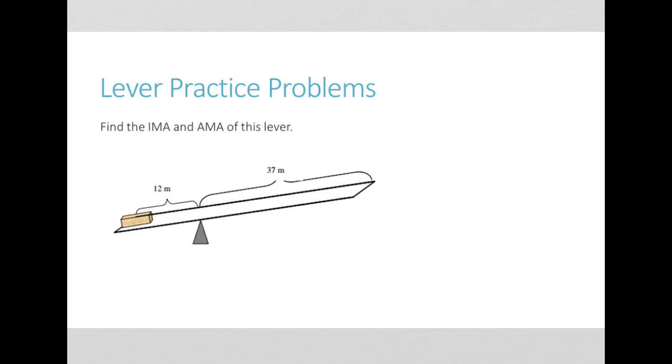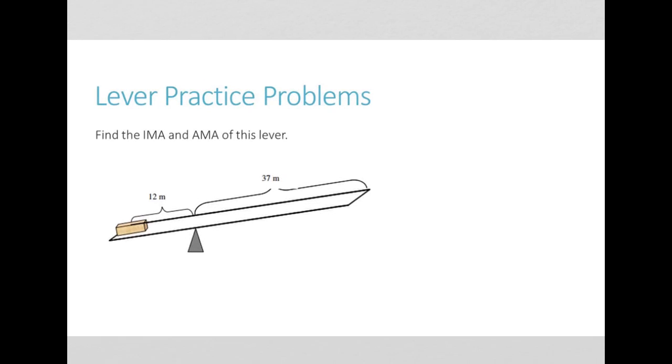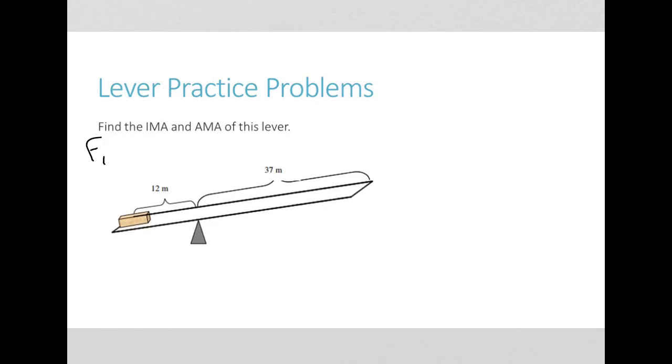Find the IMA and AMA of this lever. For this lever, we need more information, specifically the forces. Let's say the input force is 5 newtons and the output force is 15 newtons.